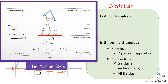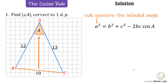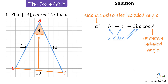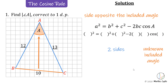Let's use the cosine rule to build our solution. Remember: a is the side opposite the included angle, b and c are the two sides either side of the included angle, and A is the included angle we don't know. Subbing in our values: a is 10, so 10 squared equals 12 squared plus 13 squared minus 2 times 12 times 13 times cosine of A.